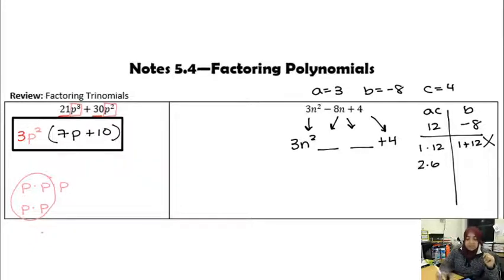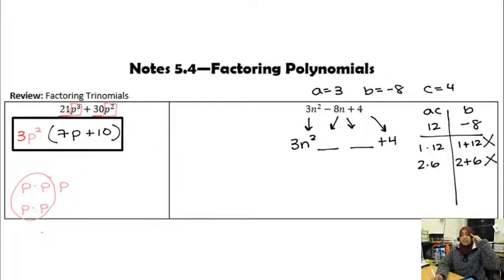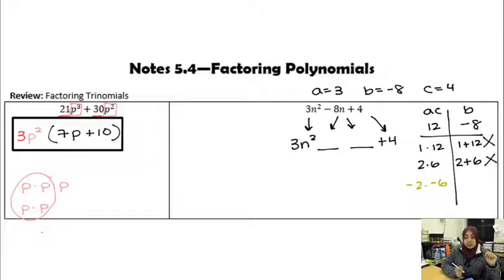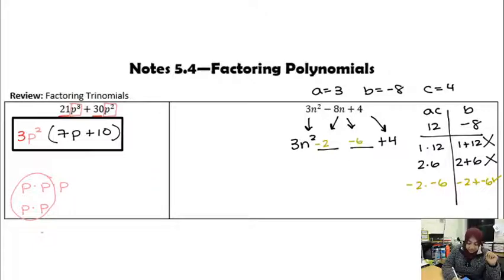2 times 6 is 12, and 2 plus 6 is positive 8 — the right magnitude but the wrong sign. If you get the positive version with the wrong sign, just change the signs on both factors. Negative 2 times negative 6 also gives positive 12, but this time negative 2 plus negative 6 equals negative 8. Those are the values that go in my two blanks: negative 2 and negative 6.